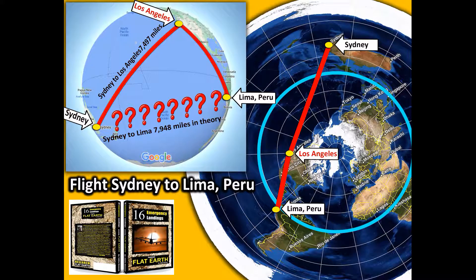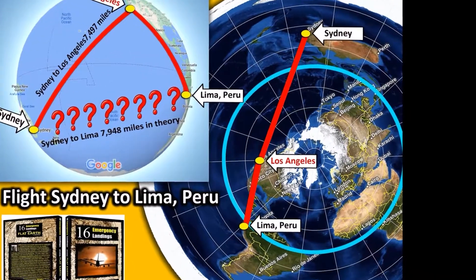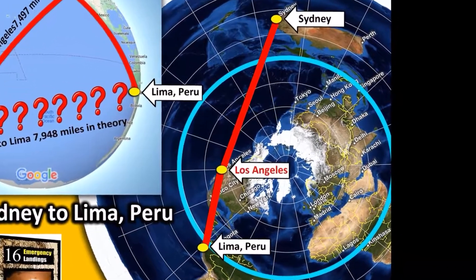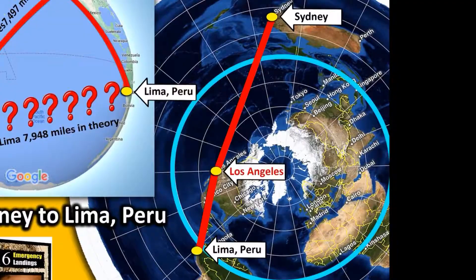Here are some examples of flights that have to cross the equator two times. Flying from Sydney to Lima, Peru, they have to go to Los Angeles first and then go south to Peru, even though the distance between Sydney and Lima would be almost the same as the distance from Sydney to Los Angeles. But since the Earth is flat — as you can observe on the flat Earth map — they have to cross the equator two times because the layout of the continents is different.